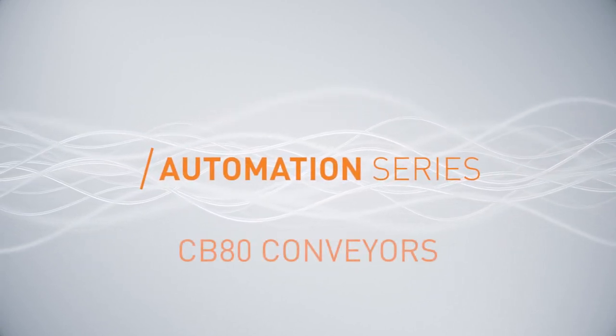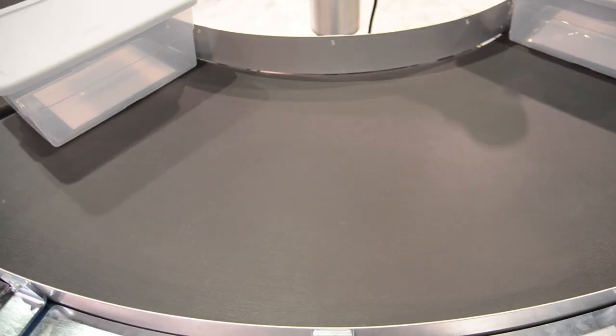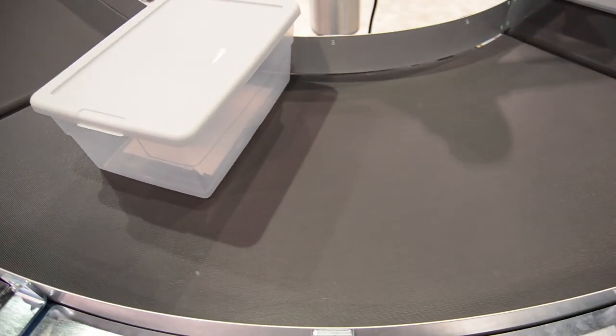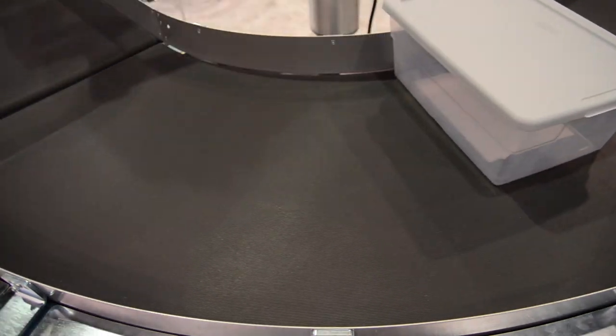QC Conveyors is excited to introduce Automation Series CB80 Curved Belt Conveyors. These conveyors feature a curved belt, making them ideal for applications where part or product orientation must be maintained when navigating a turn.